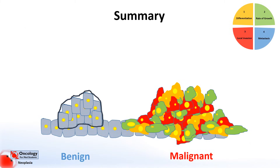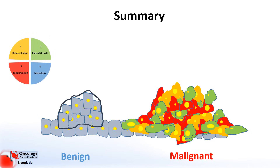So in summary — this is very simplified, but the general principles are important to remember. Benign tumors tend to be well differentiated, looking like the tissue they came from, and tend to grow more slowly than malignant neoplasms. But by definition, benign tumors do not invade the surrounding tissue and they do not metastasize.